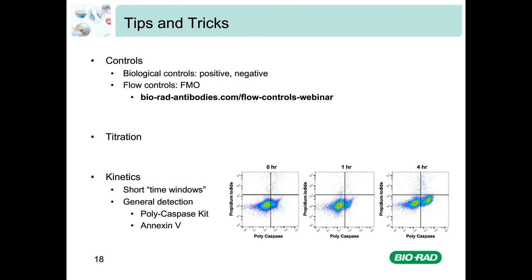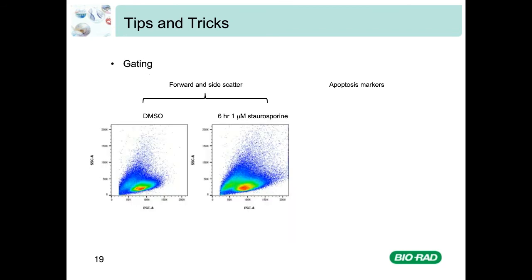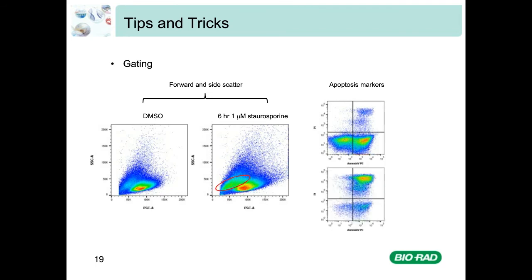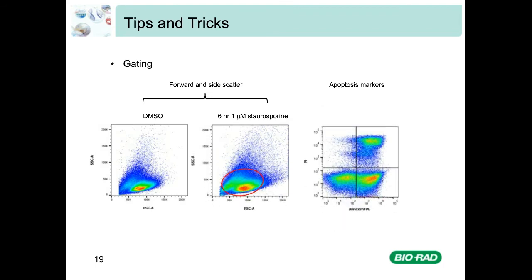Another thing to consider is gating — be sure you know where to set gates. This example of Annexin V staining of Jurkat cells shows how gate placement can alter results. If you gate only on the main population seen in the DMSO control, it may appear there are few late-stage apoptotic or necrotic cells in the upper right quadrant. If you gate on the cells to the left of this population, you can see this is where all the dying cells sit in the forward and side scatter plot. Therefore it is vital to have a large gate to include cells in all stages of cell death, with consistent gating throughout your experiment. Be aware that cell size, shape and refractive properties may change during apoptosis.